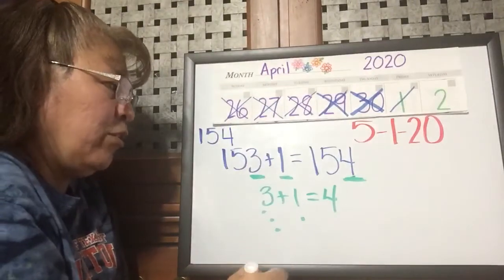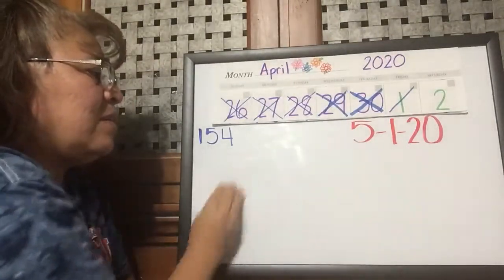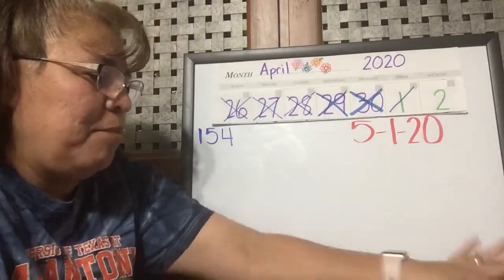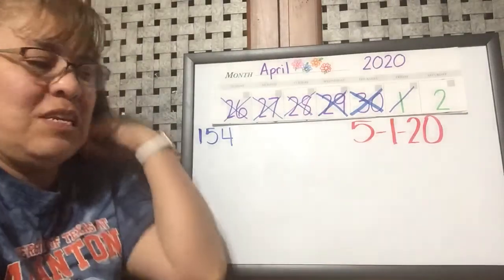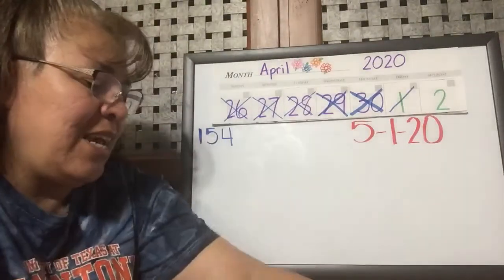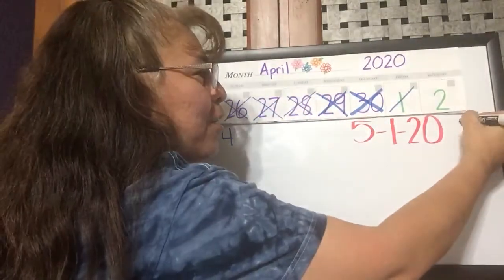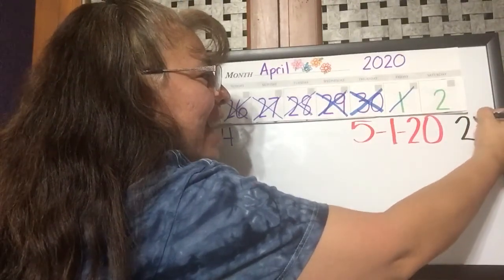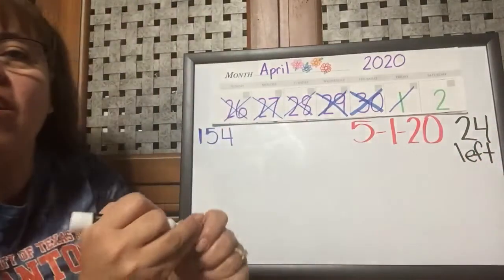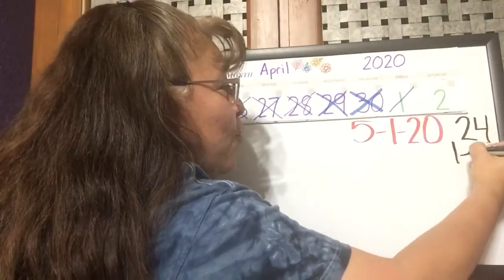154 — that's how many days we have been learning since the very first day of school. We can't say days in school because we're not in the school, but how many days of school since we left that last time. So now we're going to start counting backwards. We only have 24 days left of our online learning.